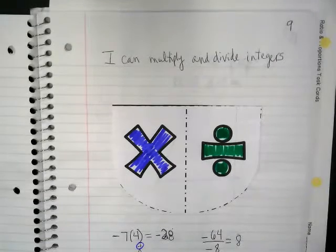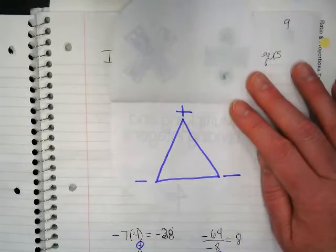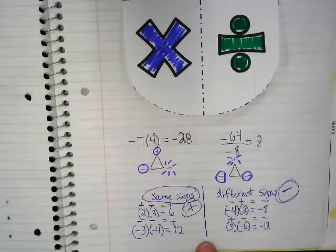Pages eight and nine. On page nine we talked about multiplying and dividing integers and you have this foldable just with the triangle inside, our magic triangle that helps us remember these things.